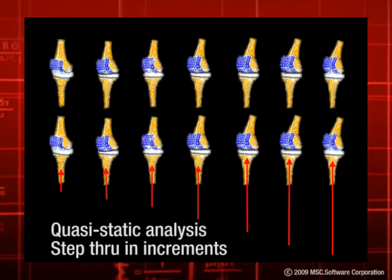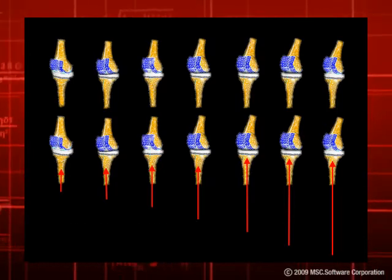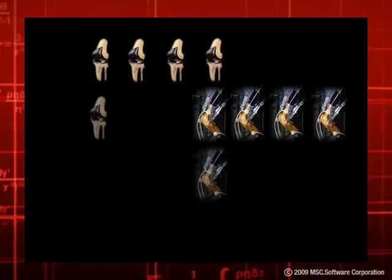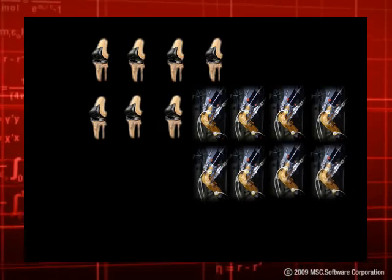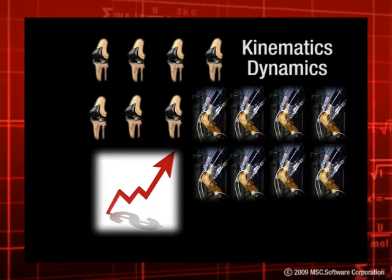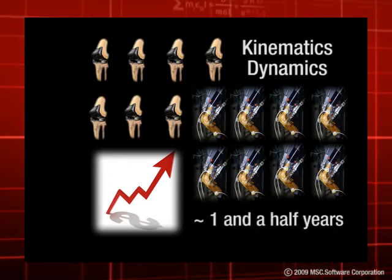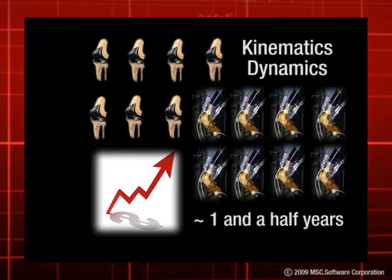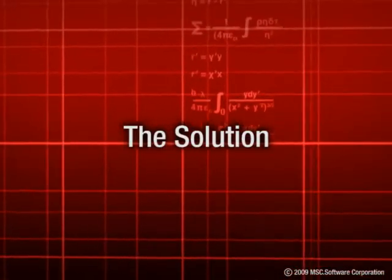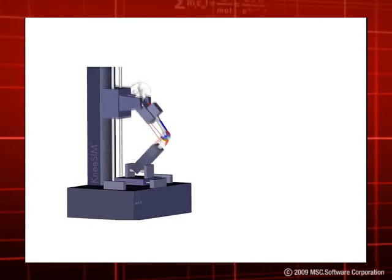Third, once modeling is complete, a lot of time is spent on analysis, especially when using quasi-static analysis methods to step through simulation in increments. Fourth, once FEA is done, physical prototypes still need to be created in the laboratory to look at kinematic and dynamic performance. The average total time for the whole process can take one and a half years, especially when four to five physical iterations need to be done.